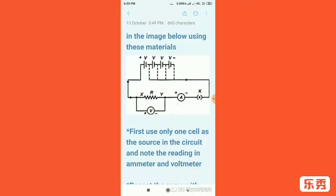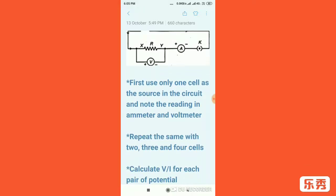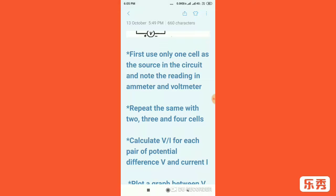Now the activity is to proceed as follows. First, only use one cell as the source in the circuit and note the reading in ammeter and voltmeter. Note it down and repeat the same with two, three, and four cells. Connect two cells and then observe the readings of ammeter and voltmeter, similarly with three cells and four cells.